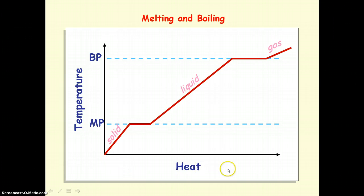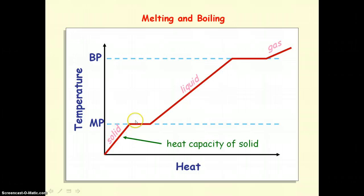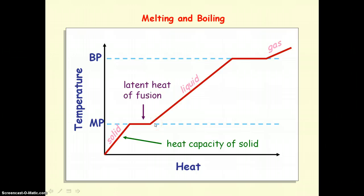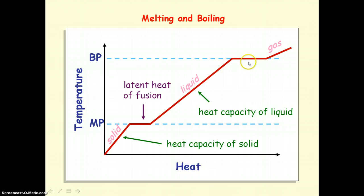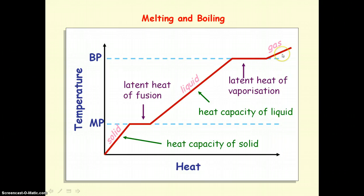Going back to the graph of heat energy against temperature: increasing the temperature of the solid involves heat capacity. At the melting point, where solid changes to liquid, that involves latent heat of fusion. Once all the solid is liquid, raising the temperature of the liquid involves heat capacity again. At the boiling point, temperature is constant and all heat energy converts the liquid to gas — that is latent heat of vaporization. When all the liquid becomes gas, raising the temperature of the gas again involves heat capacity.